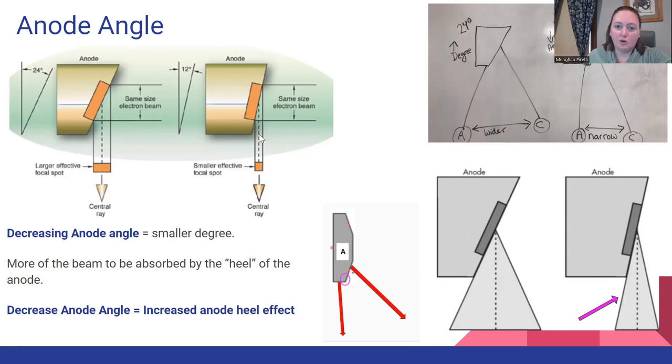This is going to cause more loss of intensity on the anode side than the other one. An increase in anode angle, bigger anode angle, less heel in the way. So decrease anode angle, smaller, increase your anode heel effect.